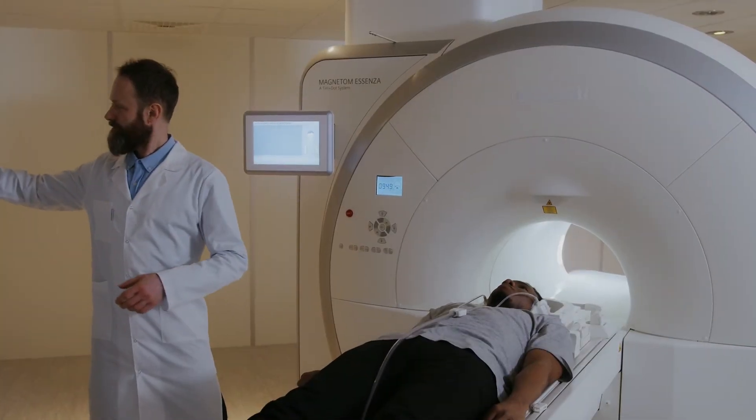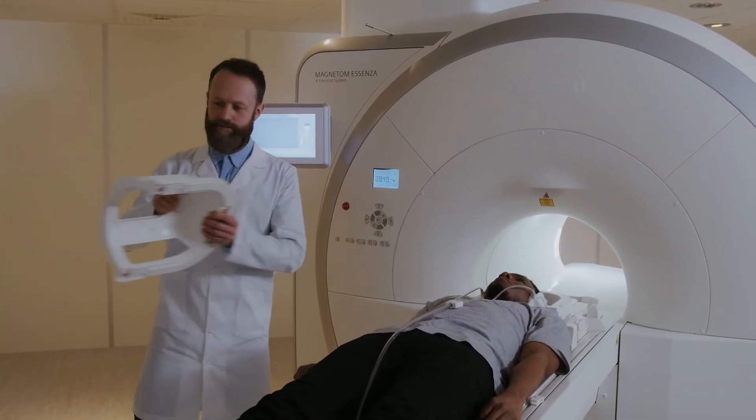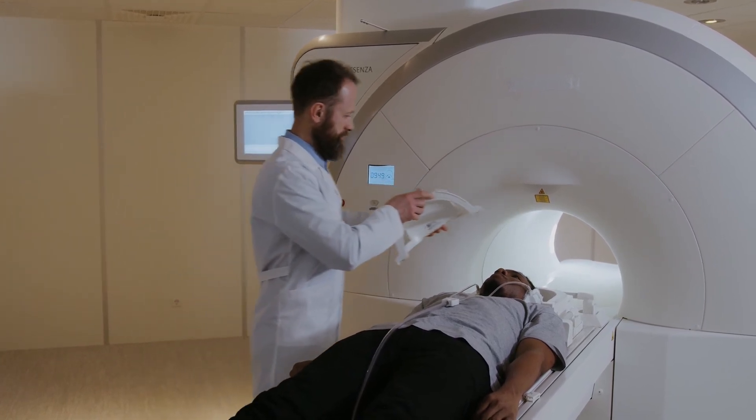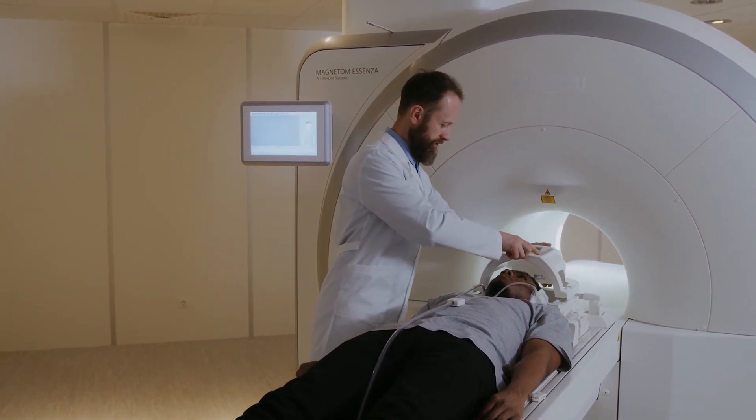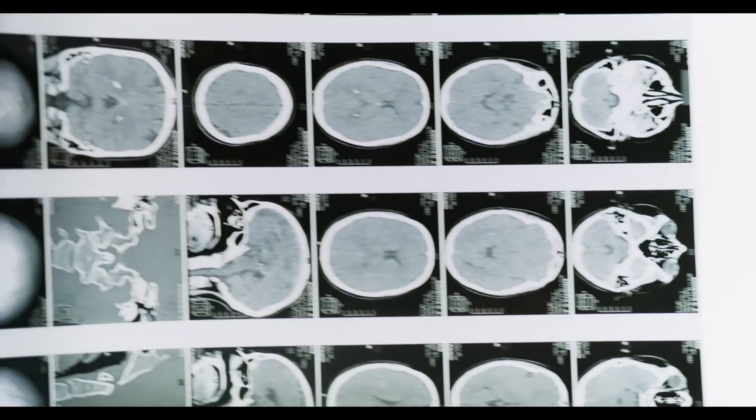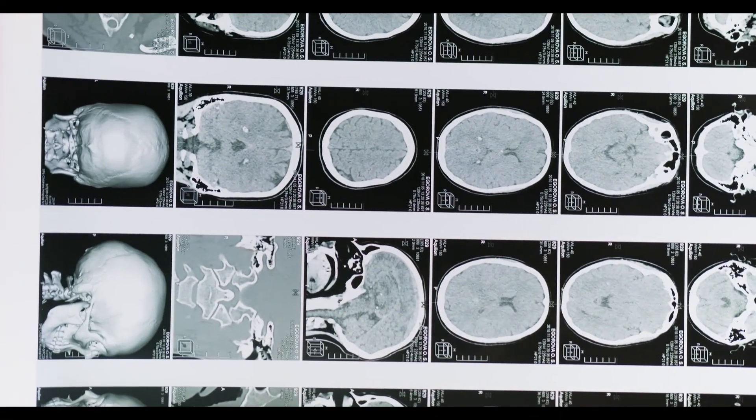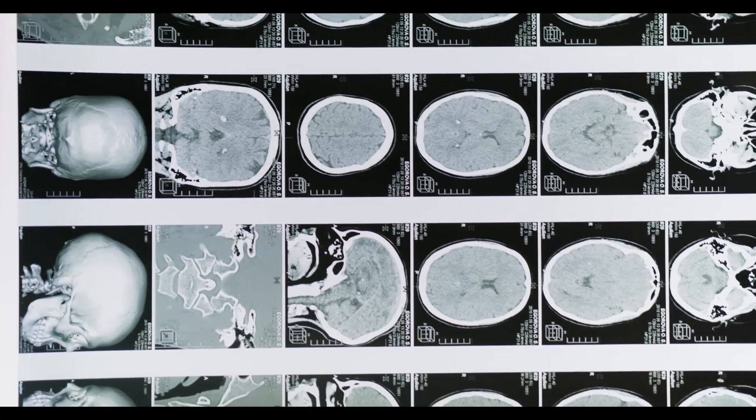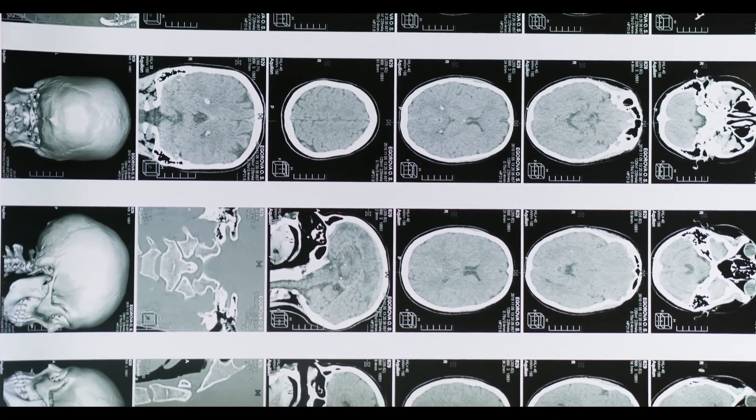Now, either T1 or T2-weighted images can be valuable for different purposes, such as investigating different neurological disorders. Also, T1 and T2-weighted images are just two of the many scans that can be done. And there are a lot more parameters that can be tweaked to get different kinds of structural MRI images.